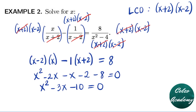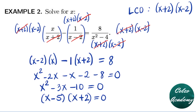We solve this quadratic equation by factoring. We need factors of negative 10 that sum to negative 3. That gives us negative 5 and positive 2, since (-5)(2) = -10 and (-5)+(2) = -3. So the factors are (x-5)(x+2) = 0. Using the zero product property: x-5=0 or x+2=0, giving x = 5 or x = -2.